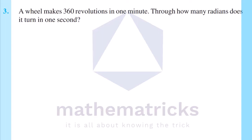The third question is: a wheel makes 360 revolutions in one minute. Through how many radians does it turn in one second? In one minute there are 360 revolutions.